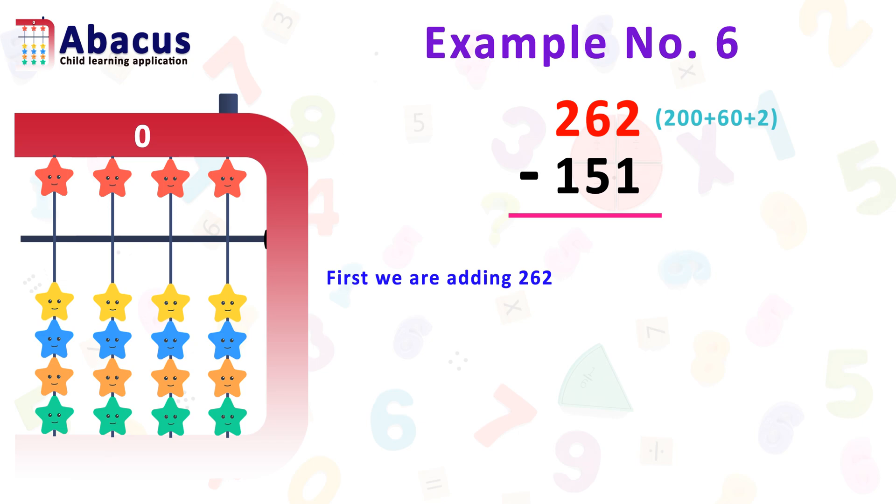So, first we have to add 2 on first rod, 60 on second rod and 200 on third rod. So, let's add 2. First, for this move 2 beads from bottom to top on rod 1 below the beam.